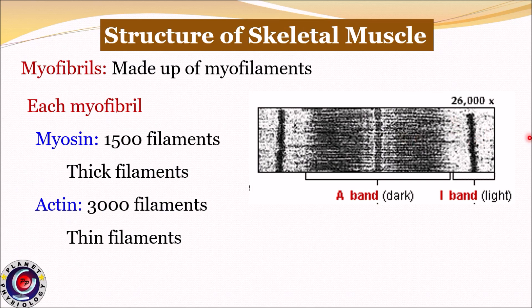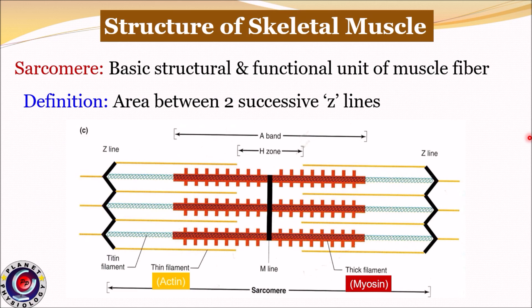Now let us study the arrangement of these myofilaments in detail. Within the muscle fiber there are filamentous proteins which run perpendicular to the length of the muscle fiber. These proteins form the Z-disc or Z-line. Actin filaments are attached to Z-lines, and these Z-lines also attach neighboring myofibrils to each other. These Z-lines divide the muscle fiber into segments, and the portion of muscle fiber between two successive Z-lines is called a sarcomere.